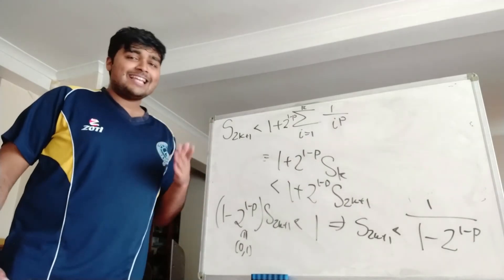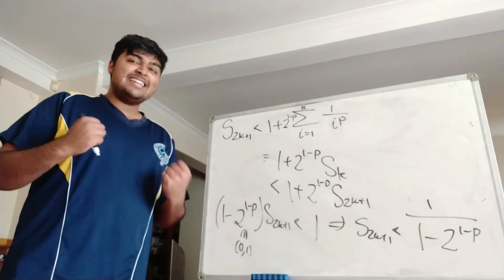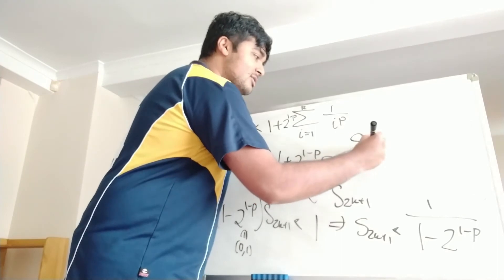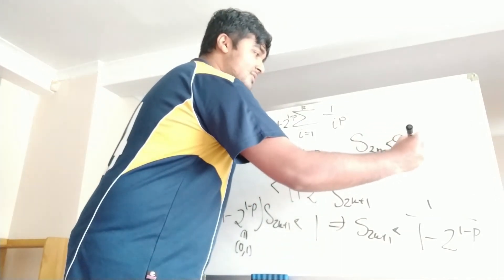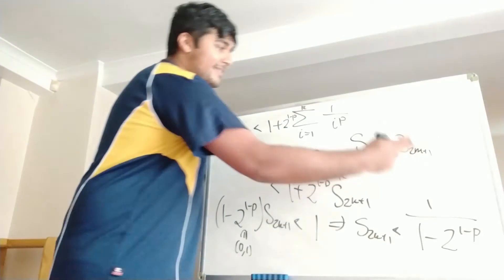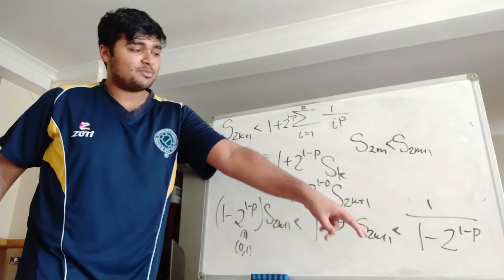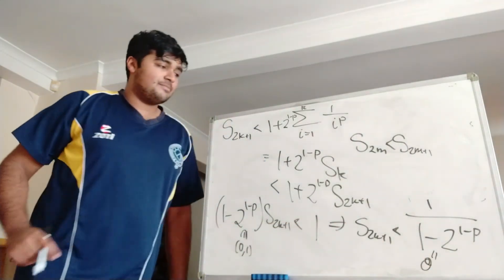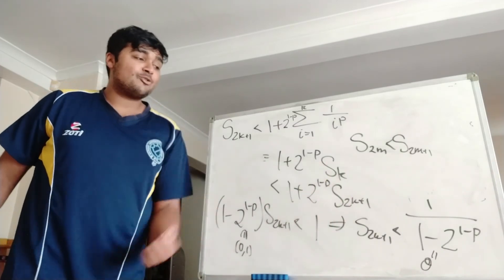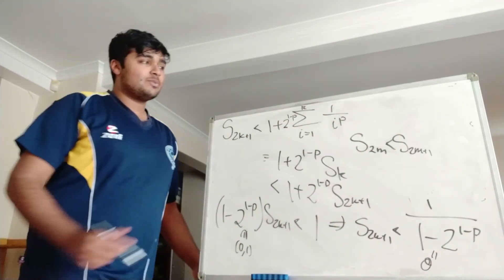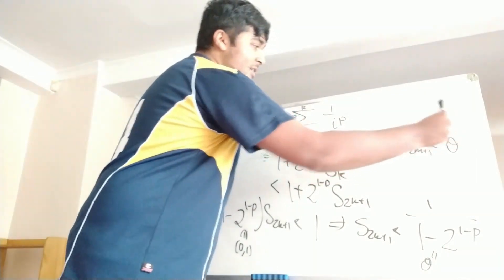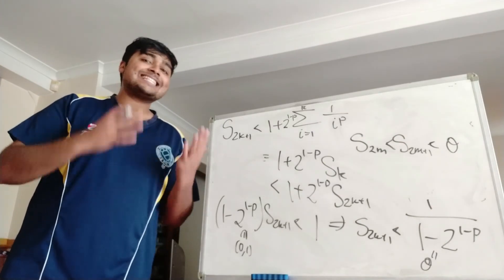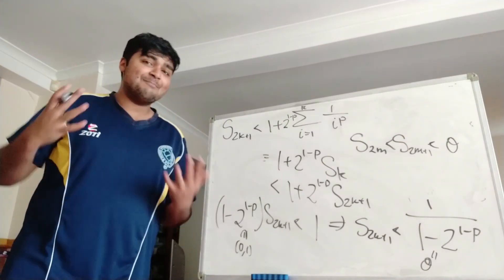We also need to consider the even terms. Going back to the fact that Sk is an increasing sequence: for any even number, say S(2m), we know it's strictly less than S(2m+1). But we've shown S(2k+1) is bounded above by that number — call it theta. So S(2m) is less than S(2m+1), which is less than theta. So all the even terms are less than theta as well. That means all terms are less than theta, hence the sequence is bounded from above, and because it's increasing, it must converge. That concludes our proof.